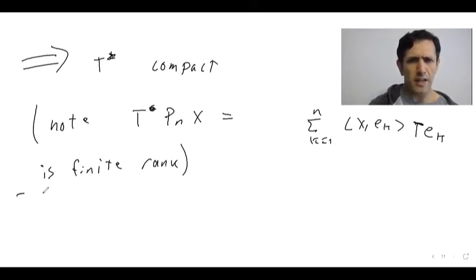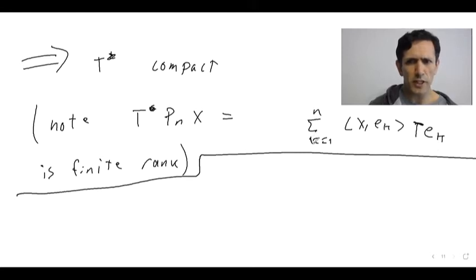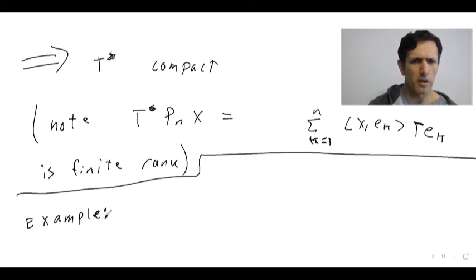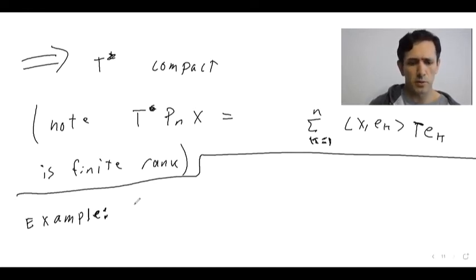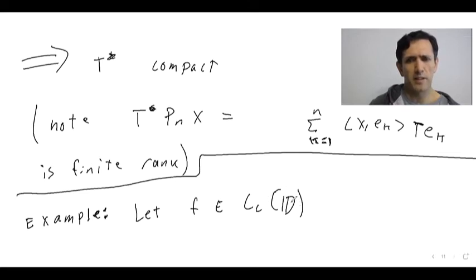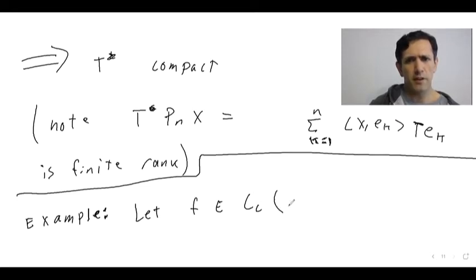I want to mention a really interesting example. If this intrigues you, it's a nice homework problem—please send it to me and I'll check it over. If you're interested in operator theory on holomorphic function spaces, this is an excellent homework problem to do. Let's say we have a function f in Cc(D), where D is the unit disk in C, and we're assuming f has compact support in D.